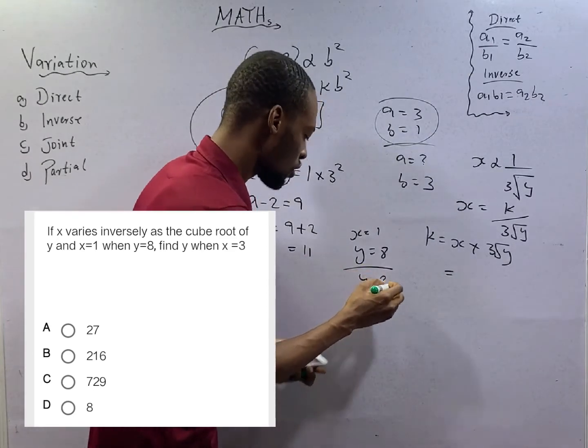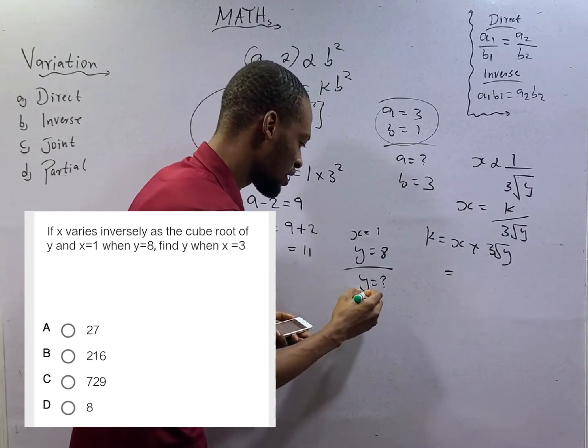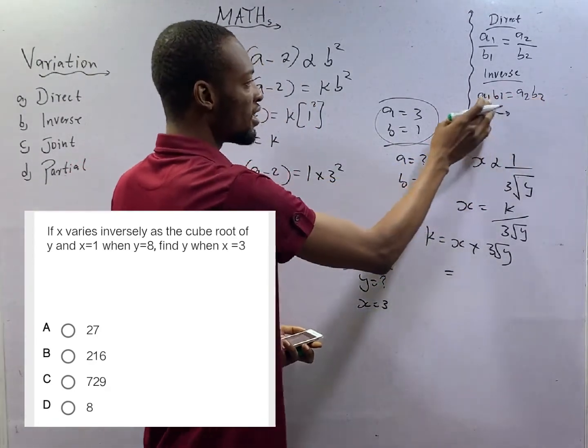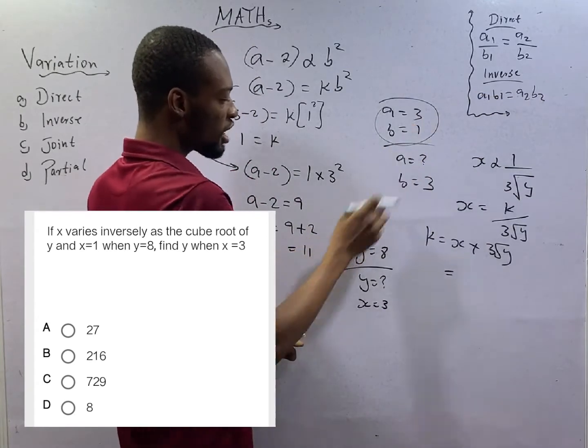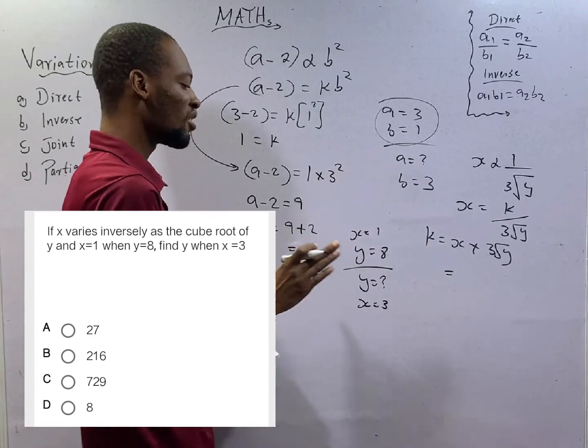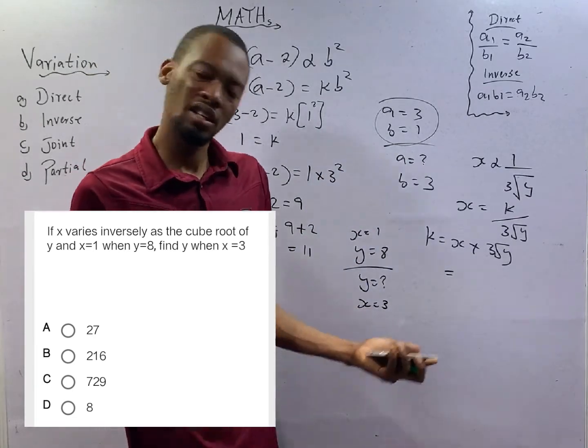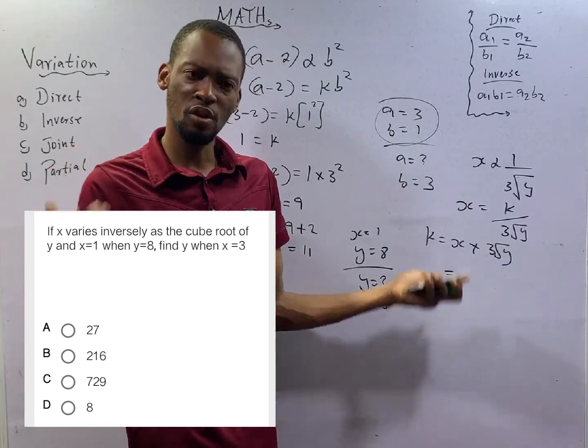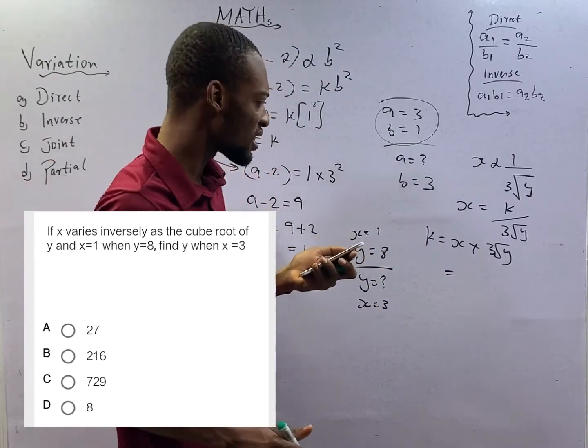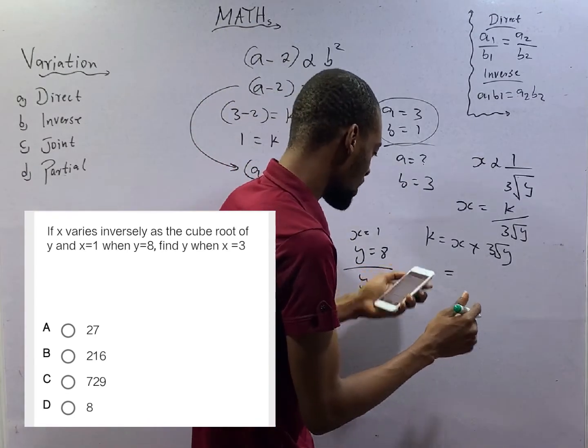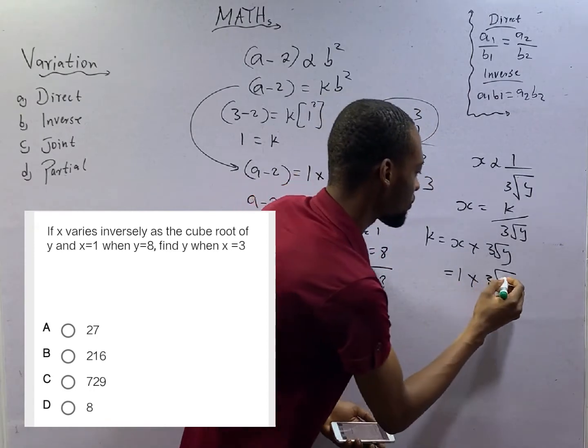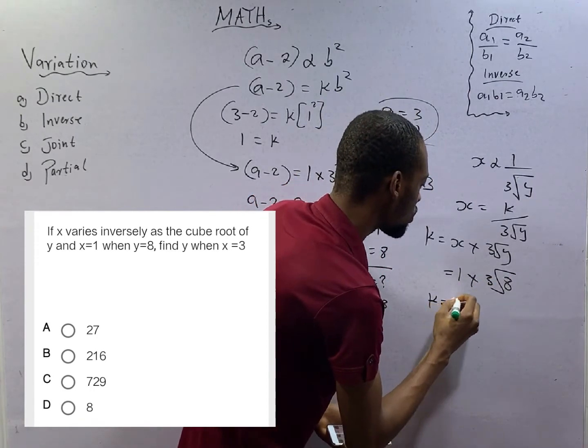So we are looking for y2 when x equals 3. So if you are using this inverse variation formula, a1 times b1 equals a2 times b2. From here you will find your y so so fast. But let's go with this. It is your duty to choose the one that works best for you. x is, when x is 1 and y is 8.